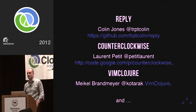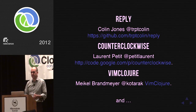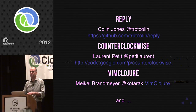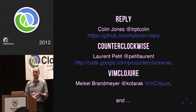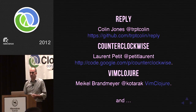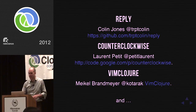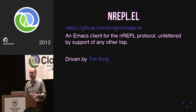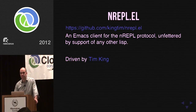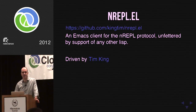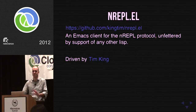There are various clients already for nREPL. Lein-repel — Colin Jones's project — is the REPL you get if you just type 'lein repl'. Lauren Petit has Counterclockwise, the Eclipse environment for Clojure. Michael Brandmeier is working on nREPL support for vim-clojure, though it's not quite there yet. There's a huge community involvement in nREPL. The final client is nrepl.el, being driven by Tim King — an Emacs client for nREPL with the idea of replacing SLIME with a Clojure-specific client, not encumbered by supporting Common Lisp or Scheme.